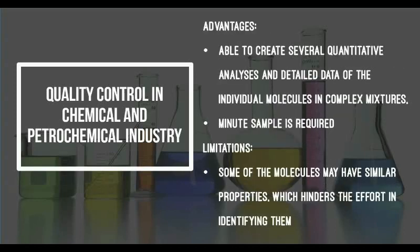There are several advantages of using mass spectrometry for quality control in the chemical and petrochemical industry. Using mass spectrometry, it will be possible to create several quantitative analyses and detailed data of the individual molecules present in the complex mixtures. Furthermore, only minute samples will be required for the analysis. However, there are also limitations present. As some of the molecules have similar properties, it may be difficult to accurately differentiate them due to limitations of the mass spectrometer used. This hinders the effort in identifying them.